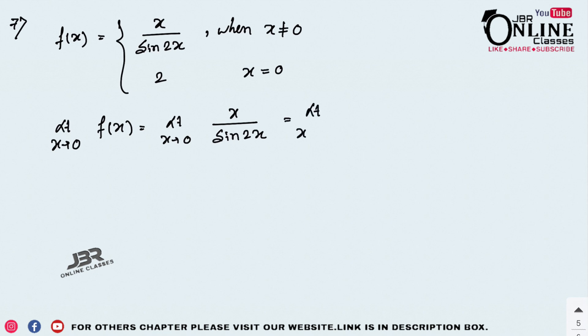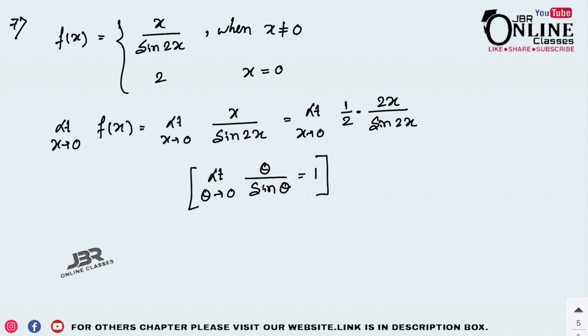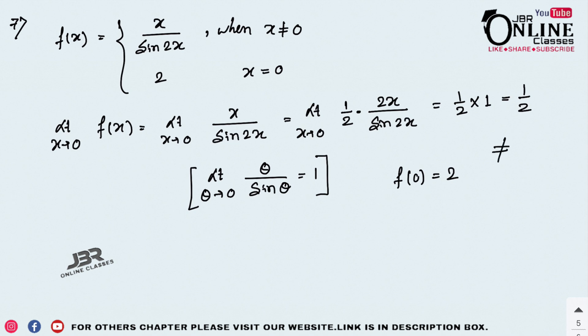Adjusting by multiplying numerator and denominator by 2, we get (1/2) · (2x / sin(2x)). As x → 0, (2x / sin(2x)) → 1, so the limit equals 1/2. But f(0) = 2. Since the limit ≠ f(0), f is discontinuous at x = 0.